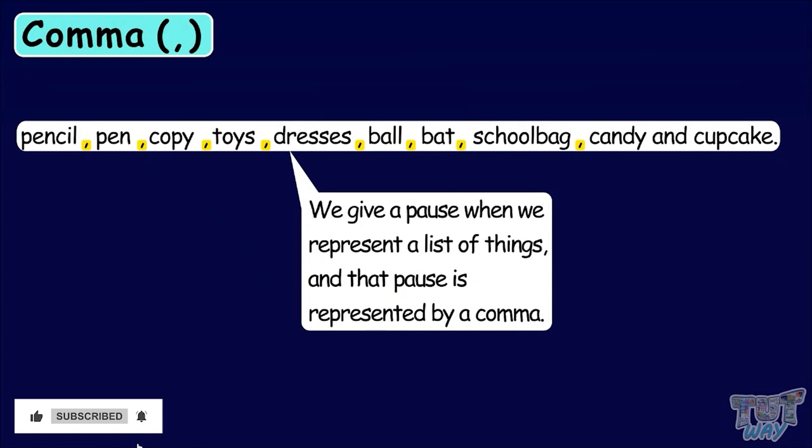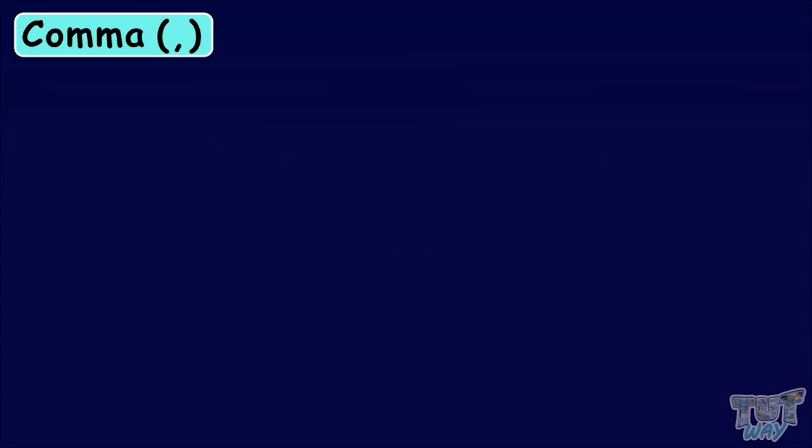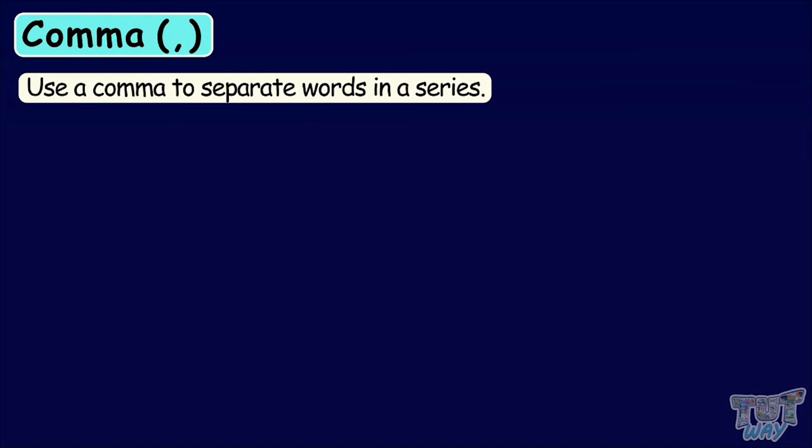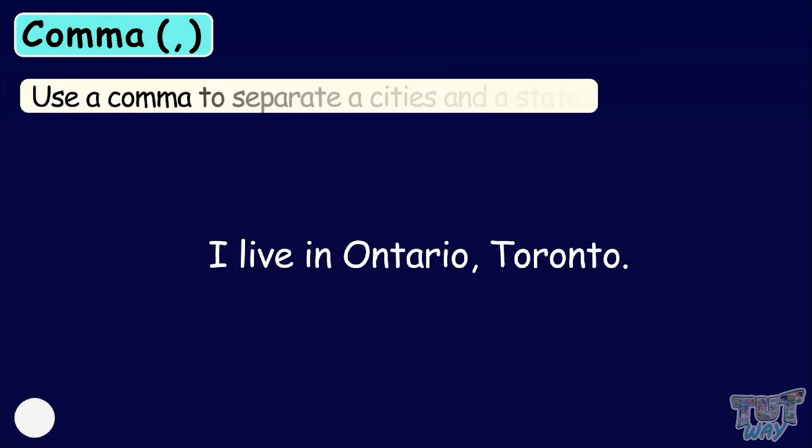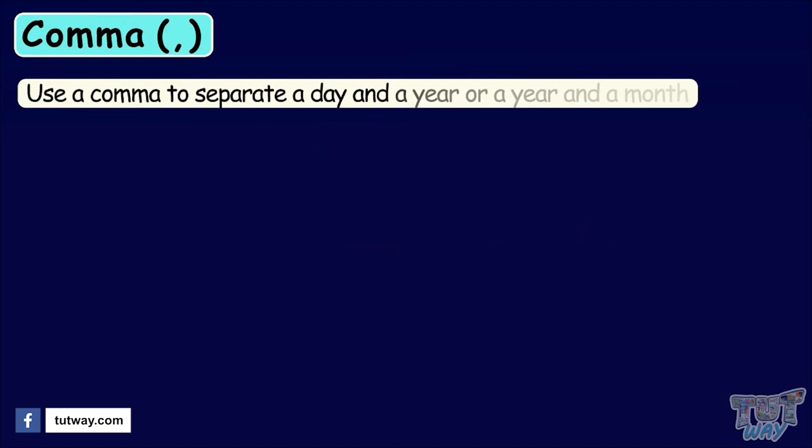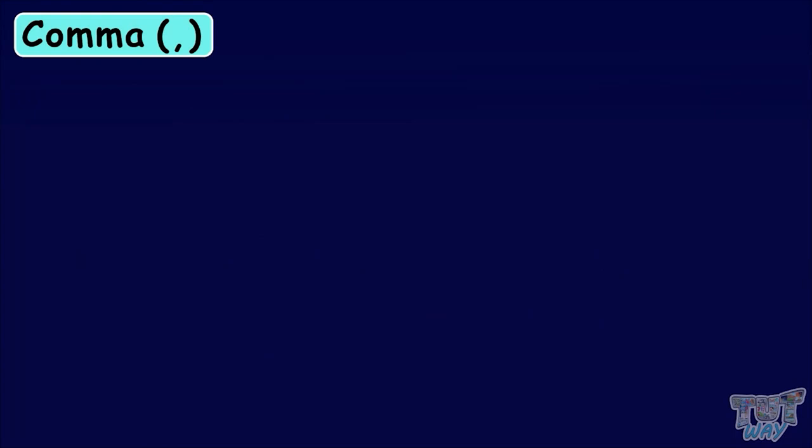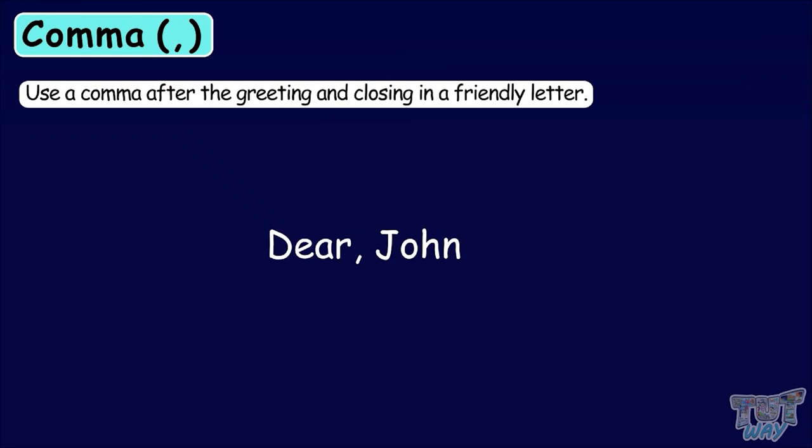A comma is used for many more purposes, like it is used to separate words in a series. We can use a comma to separate a city and a state. Use a comma to separate a date and a year or a month and a year. We use a comma after the greeting or closing in a friendly letter. We use a comma to separate pairs of words with the same class of things.